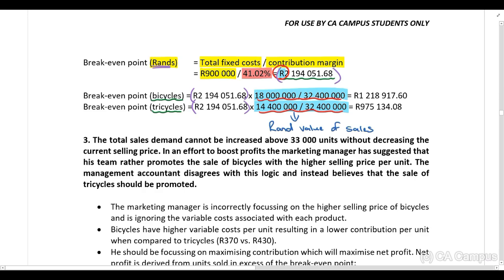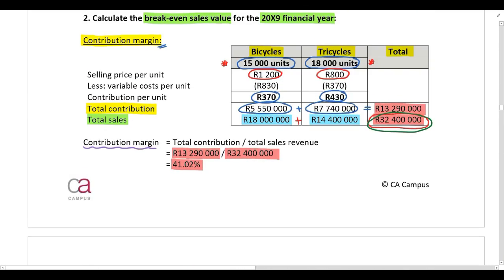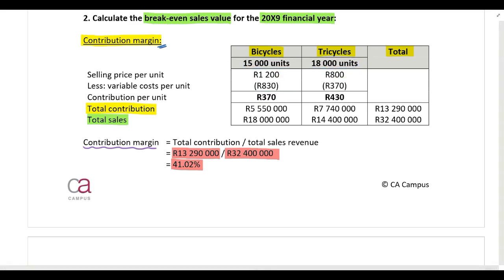In part three, the total sales demand cannot be increased above 33,000 units without decreasing the current selling price. To boost profits, the marketing manager has suggested promoting bicycles, which have the highest selling price per unit. The management accountant disagrees and believes the sale of tricycles should be promoted instead.